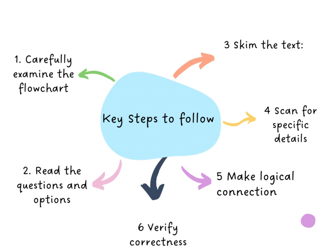Number five is to make logical connections. Use your understanding of the flowchart and the information in the passage to make logical connections and fill in the missing information. Ensure that the completed flowchart reflects a coherent sequence of events. The last step is to verify correctness — double-check your answers to ensure that the completed flowchart accurately represents the process or sequence of events described in the reading passage.